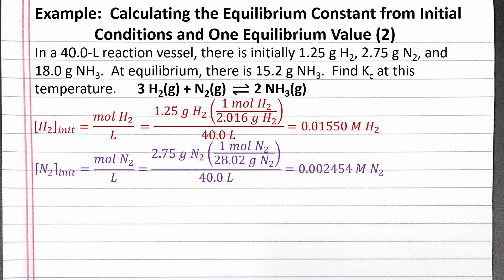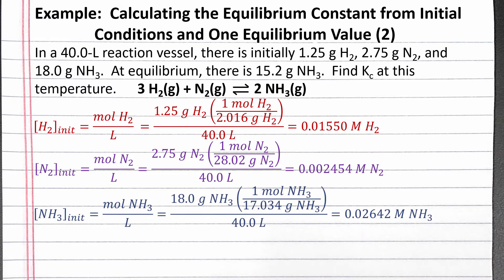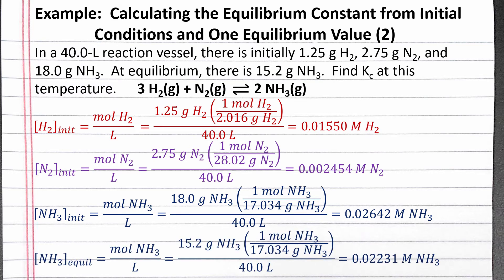We can do the same to calculate the initial concentration of nitrogen gas, converting 2.75 grams nitrogen to moles using its molar mass, and we should get 0.002454 molar nitrogen gas. We follow a similar process to calculate the initial concentration of ammonia gas, which is 0.02642 molar, and the concentration of ammonia gas at equilibrium, which is 0.02231 molar.